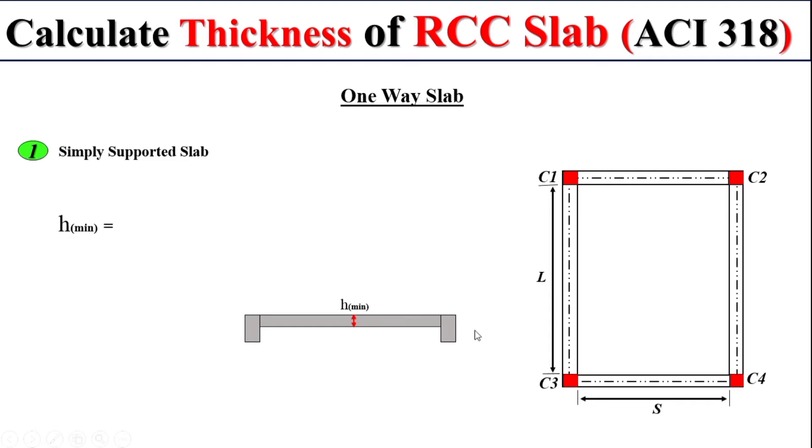That is S divided by 20 multiplied by this term. Remember, in this formula, S represents the shorter span length and FY represents the yield strength of the steel which is used in the slab. And remember, this term will be multiplied to the S by 20.